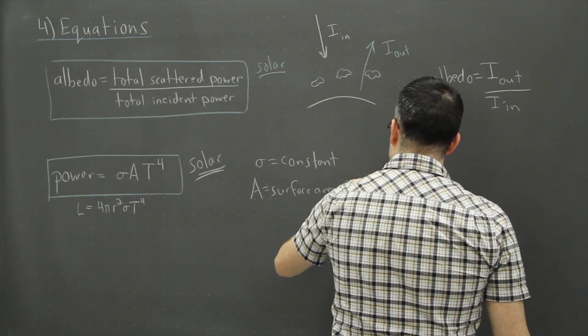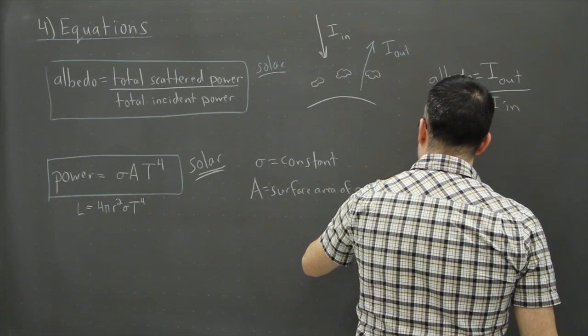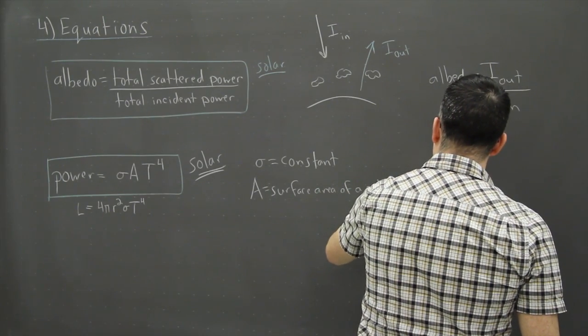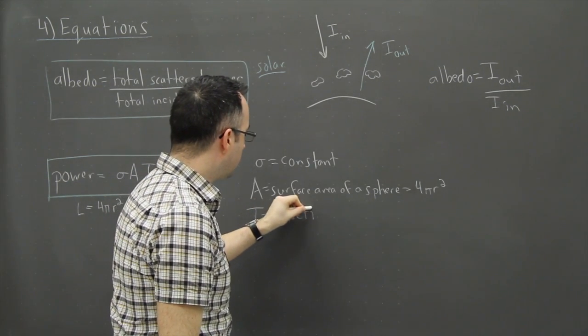So this is just a constant. A is again the surface area of a sphere. Okay, so the surface area of a sphere, that's just 4πr², where r is a distance away. So that's going to be measured then in meters squared.